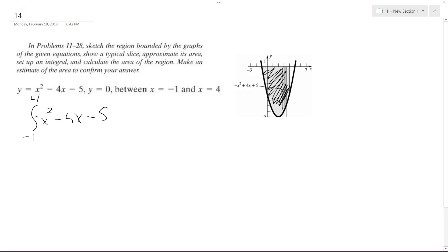Otherwise if we don't, we'll still get the right answer, it just won't be positive. So it becomes negative x squared plus 4x plus 5.